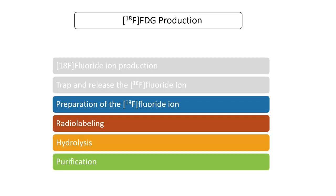We have now completed the first two parts: F-18 fluoride ion production, trap and release of F-18 fluoride ion, and the various byproducts formed from O-16 water and from the target window and target body. In the next presentation, we will cover the remaining four steps. Thank you for watching.